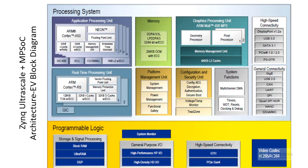The EV device is the video processing enhanced variant of Zynq UltraScale+ MPSOC. Like the EG, it has four ARM Cortex-A53 APU cores and a Mali GPU, but it also adds a video codec unit not available in the EG device. This video codec enables processing of high-speed video inputs and provides real-time video outputs.